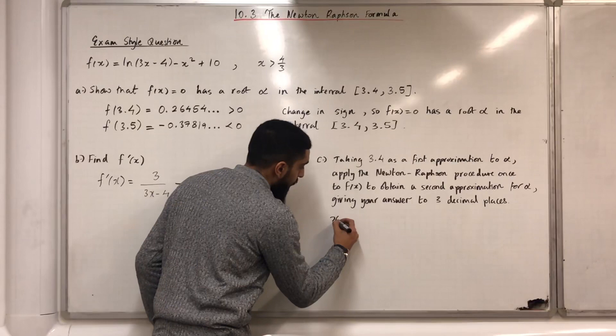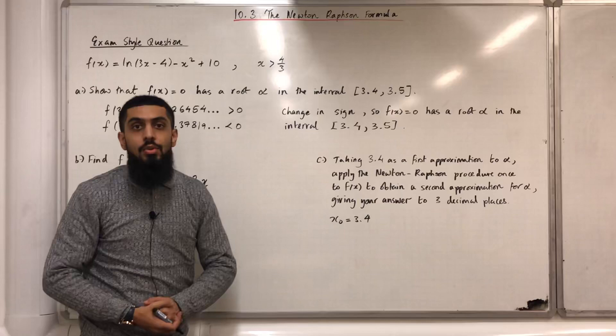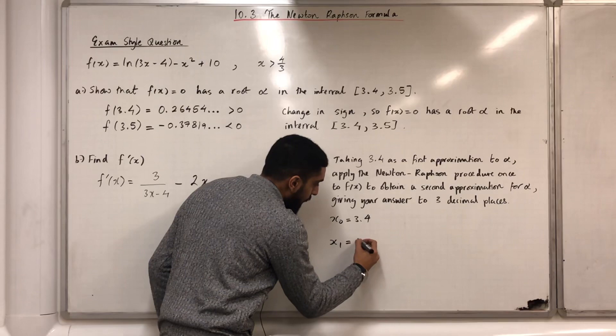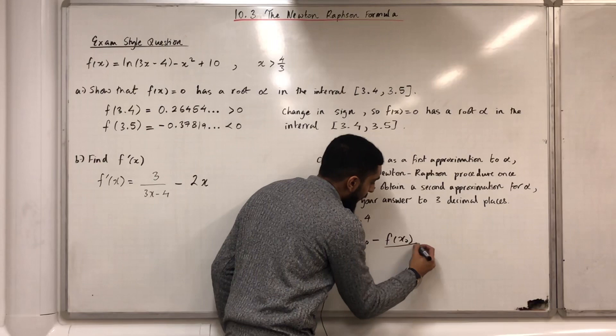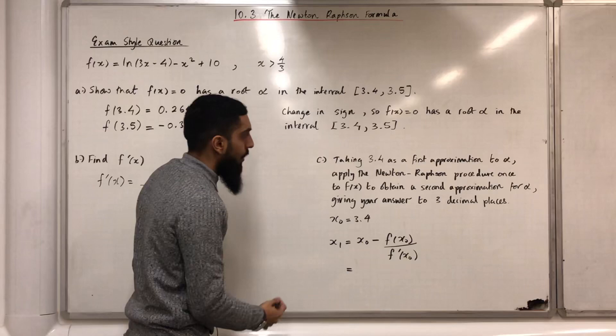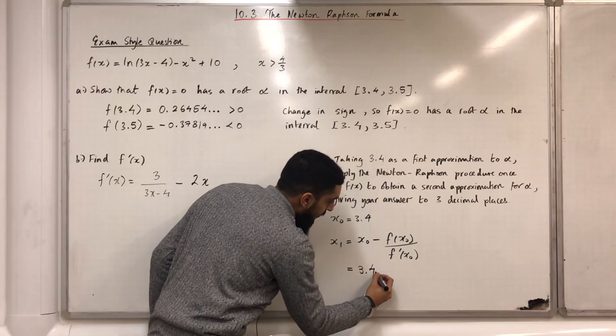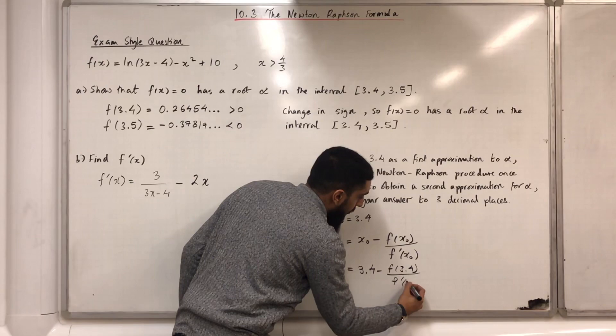We want a second approximation using the Newton-Raphson formula. That second approximation will be x1 equals x0 minus f(x0) divided by f'(x0). x0 is 3.4, so I can write 3.4 minus f(3.4) divided by f'(3.4).